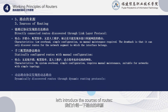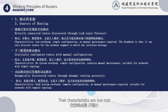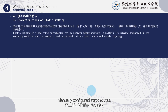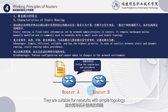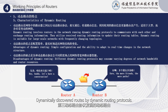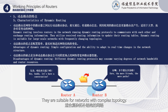Let's introduce the sources of routes. Directly connected routes are discovered by the link layer protocols; their characteristics are low cost, simple configuration, and no manual maintenance required, but they can only discover routes within the same interface subnet. Manually configured static routes have no system overhead and simple configuration, but require manual maintenance; they are suitable for networks with simple topology. Dynamically discovered routes use dynamic routing protocols; they have high system overhead and complex configuration, but require no manual maintenance, and are suitable for networks with complex topology.